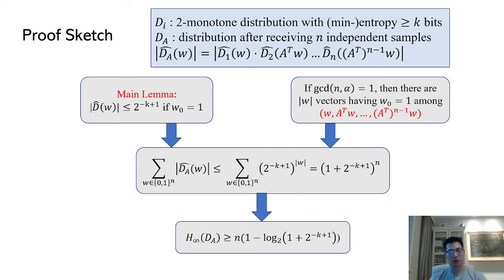It turns out that if A is rotation by alpha and alpha is coprime to n, then the number of vectors among this set whose first bit is 1 is equal to the Hamming weight of w. So we can take a summation over Hamming weight and easily show the min entropy of dA is linear.